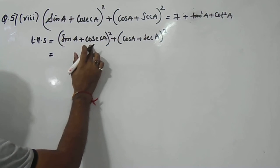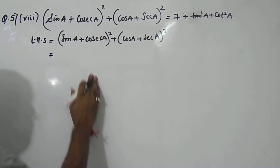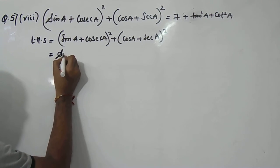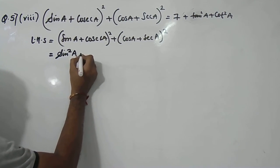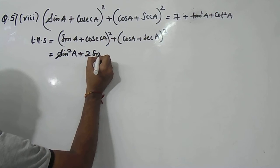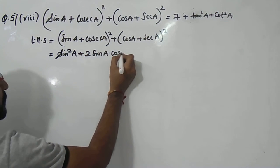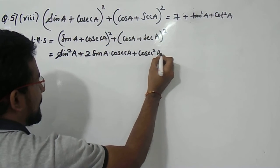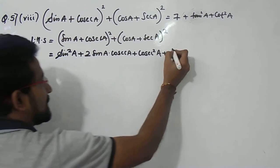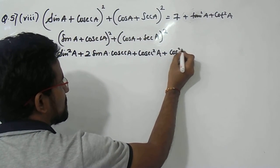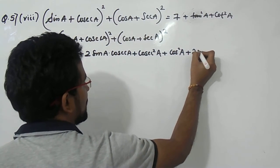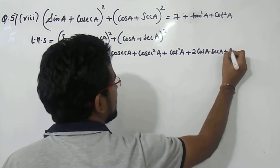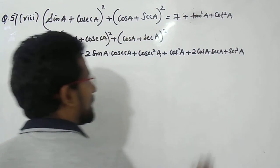So we have (sin a + cosec a)², and we will use the identity that (a + b)² equals a² + 2ab + b². So that gives us sin²a + 2·sin a·cosec a + cosec²a. Similarly, for the second term (cos a + sec a)², we apply the same identity to get cos²a + 2·cos a·sec a + sec²a.